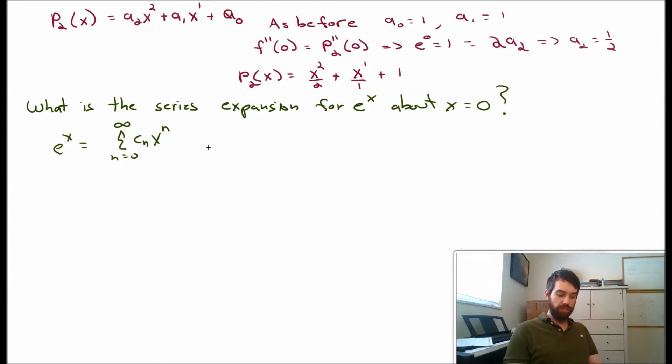where cn are some coefficients, and I want to know what are they? Basically, what cn's have the property that that infinite series equals e^x, at least about x equal to 0.